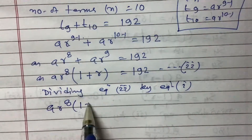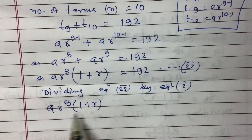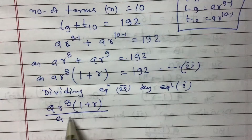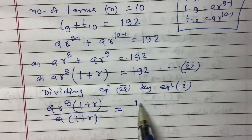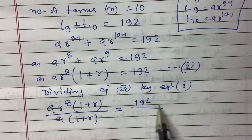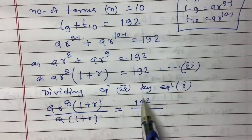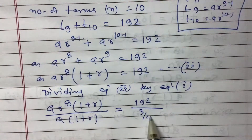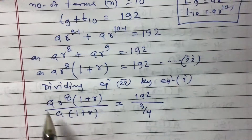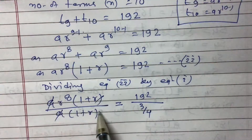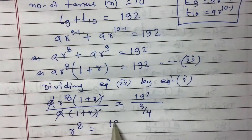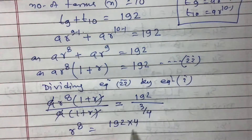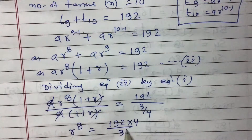Dividing Equation 2 by Equation 1: ar⁸(1 + r) divided by a(1 + r) equals 192 divided by 3/4. Here a and a cancel, and (1 + r) and (1 + r) cancel, giving r⁸ = 192 × (4/3) = 256.